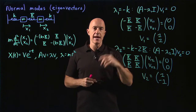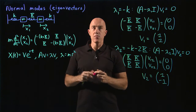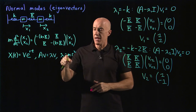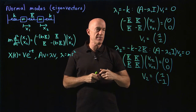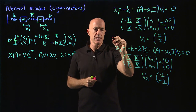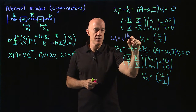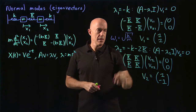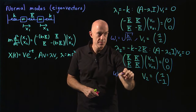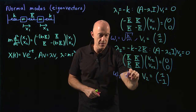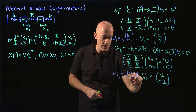I should also write down the eigenvalues in terms of frequencies. The first eigenvalue is negative k, and as discussed, this leads to a frequency: omega one equals the square root of little k over m. The second frequency is omega two, which equals the square root of little k plus two big K, all over m.